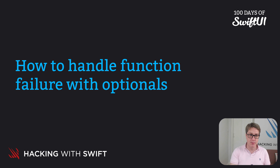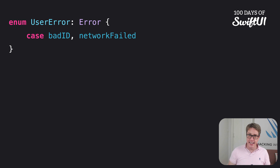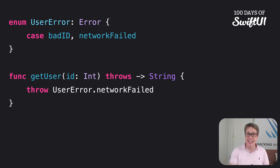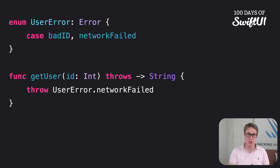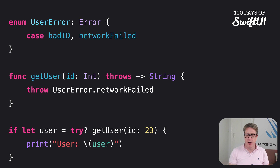If you want to know what error was thrown, don't use try?. Here's how it looks. Here's an enum called UserError that conforms to Swift's Error protocol with two cases: badID and networkFailed. Then here's a function called getUser with an id integer parameter that can throw errors and return a String. It immediately throws UserError.networkFailed. Now we're going to call that without do and catch — we'll use try?, saying: if let user = try? getUser(id: 23).